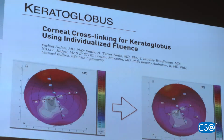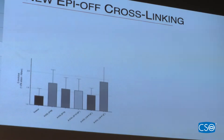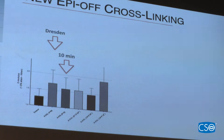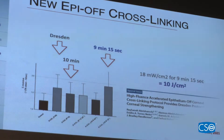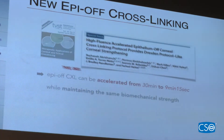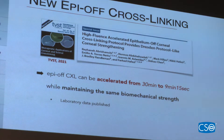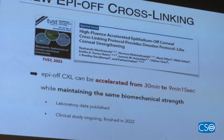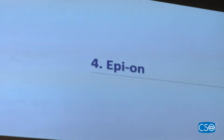A second technique is a new epi-off cross-linking method. Since last year, we identified for the first time an epi-off protocol as effective as Dresden but much faster — instead of 30 minutes, we can reach the same stiffening effect in only 9 minutes and 15 seconds, maintaining the same biomechanical strength. After our clinical study finishes, this will be integrated into the CI device.